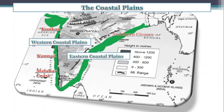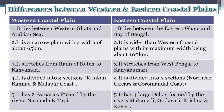Eastern Coastal Plain lies between the Eastern Ghats and the Bay of Bengal, and it stretches from West Bengal to Kanyakumari. It is divided into two parts: Northern Sarkar and Coromandel Coast.